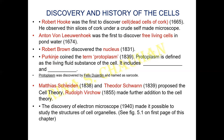Then there was the cell theory, proposed by two scientists. They usually ask you the names of scientists who initially gave the cell theory — it was M. Schleiden and T. Schwann. Schleiden was a botanist who studied plant cells; Schwann was a zoologist who studied mostly animal cells. Together they proposed that all living organisms, all plants and animals, are made up of cells. Rudolf Virchow later added one more point to the cell theory: that cells arise from pre-existing cells.